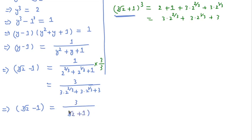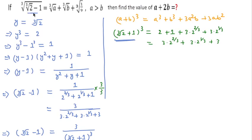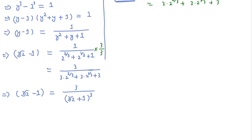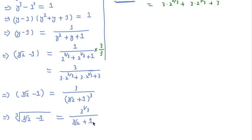We can write (cube root of 2 plus 1)³ in the form shown. Since cube root of 2 minus 1 is also under a cube root, if we take the cube root of both sides, cube root of 3 is 3 to the power 1/3 and the cube root cancels, giving us cube root of 2 plus 1. We had originally considered y equal to cube root of 2.